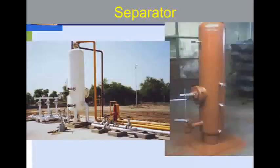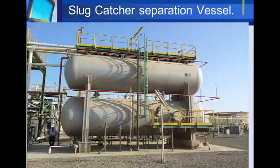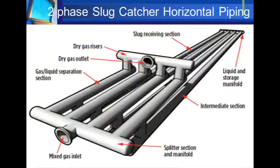Separators may be called a free water knockout drum, production separator, high-, medium-, or low-pressure separator, scrubber, or a slug catcher. A slug catcher may be a large separator vessel or a group of large-sized pipes installed upstream of the production separator to handle liquid slugs in the flow, as will be explained later.